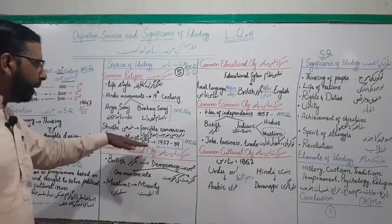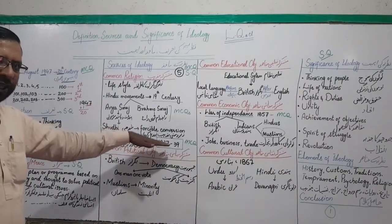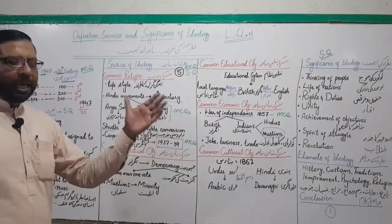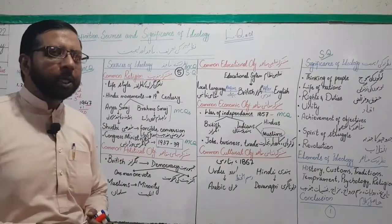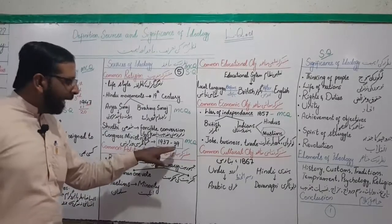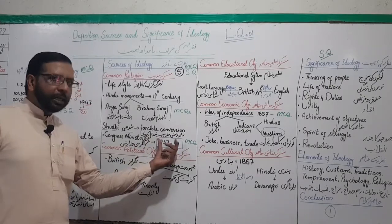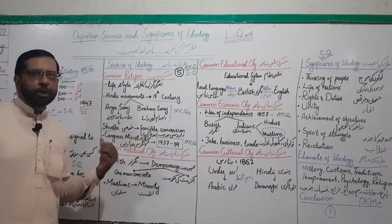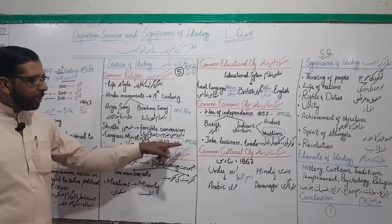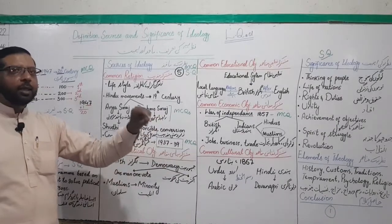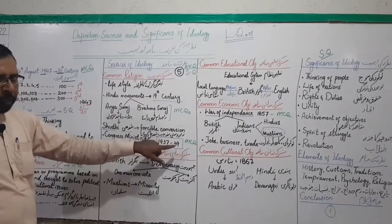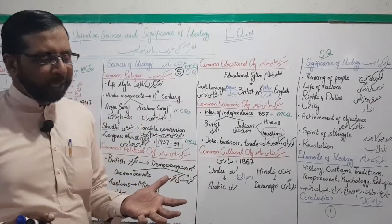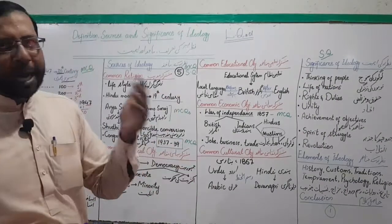In the meantime, in 1937 elections ke baad Congress ki ministries — Congress ki hukumaten — different provinces mein ban gayin. Total 11 provinces the, jismein se 7 provinces mein Congress ki governments bani jo 1939 tak rahin. So 1937 to 1939 — this period is known as the era of Congress ministries. Highlight kar lijiye, yeh MCQ hai, important — exercise ke andar first MCQ yahi hai.